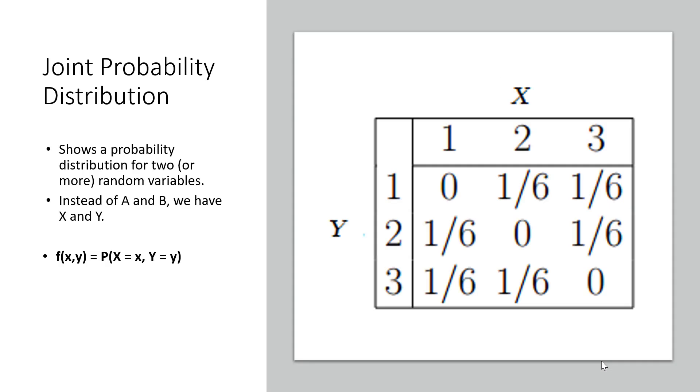We can also show joint probability in a table. A joint probability distribution shows a probability distribution for two or more random variables. Instead of events being labelled A and B, the norm here is to use X and Y.